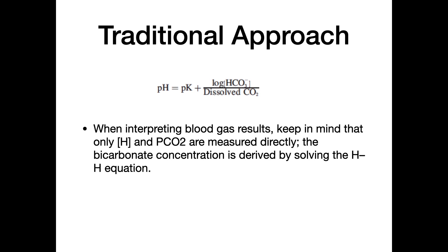The traditional approach to acid-base interpretation is based on the formula: pH equals pK plus the logarithm of bicarbonate concentration divided by dissolved carbon dioxide. Keep in mind that when interpreting a blood gas report, the bicarbonate you see is actually calculated based on the formula rather than measured. The actual measured values are the hydrogen ion concentration and the pCO2.